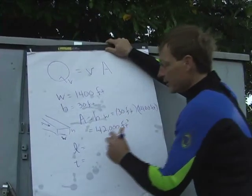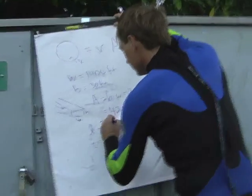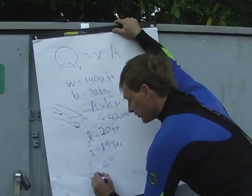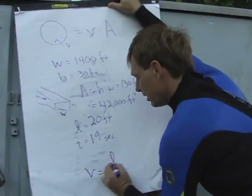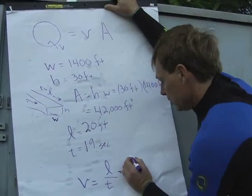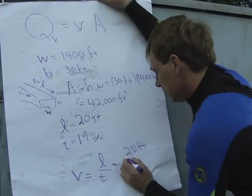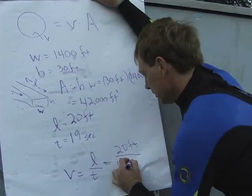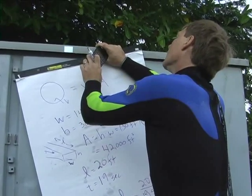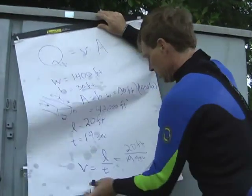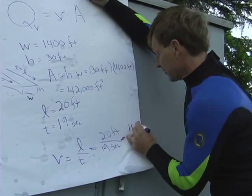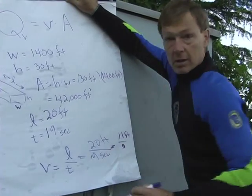So we've got everything we need now. The distance is 20 feet and the time was 19 seconds. The velocity is equal to the distance L over the time — that's going to be 20 feet over 19 seconds, which is about 1.05. We only have two significant figures of accuracy, so let's call it 1.1 feet per second.